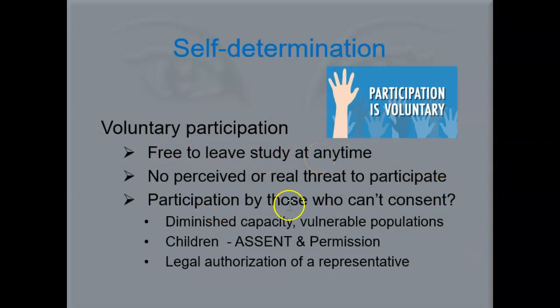For people who can't consent — such as children — we need their parents or legal guardians to consent on their behalf. For example, if we want children to participate in a study about cavities, the children can't consent themselves, so we need their legal guardian to consent for them.